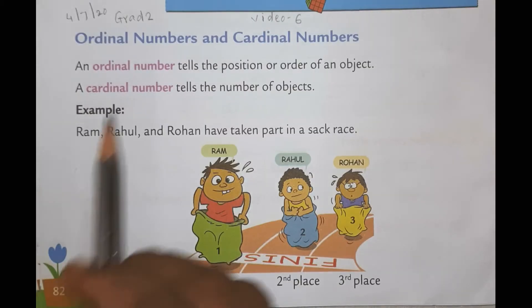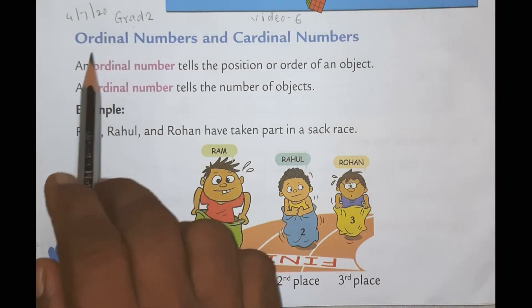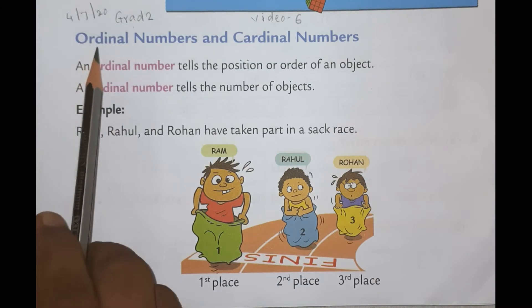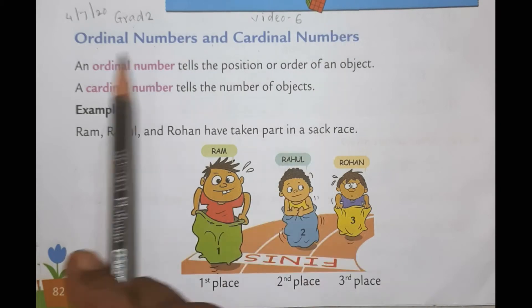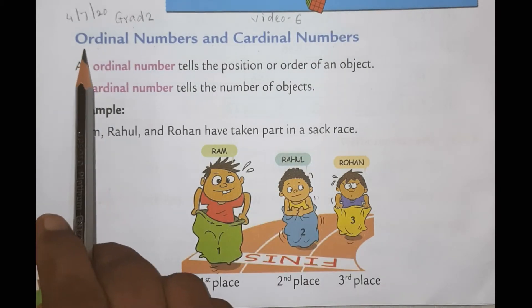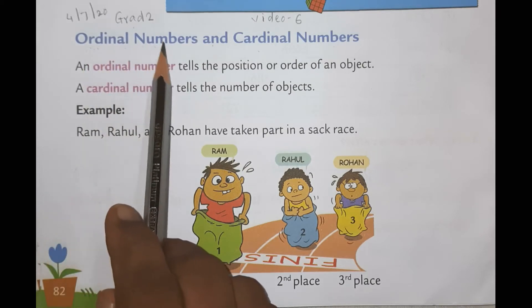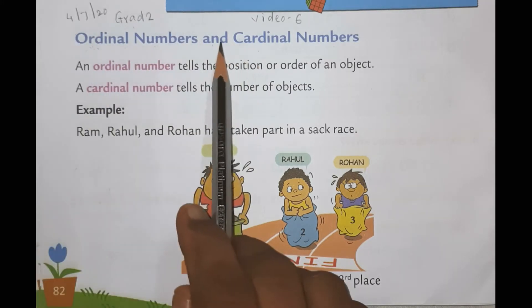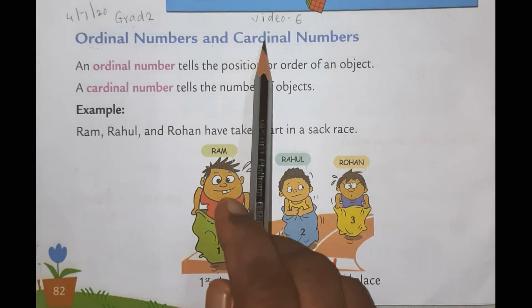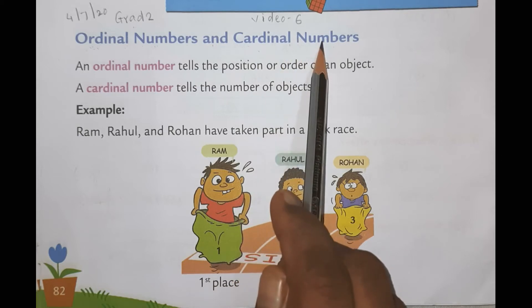Jai Barat children. So my great two children, today we are going to learn ordinal numbers and cardinal numbers. What is the spelling for ordinal? O-R-D-I-N-A-L. Ordinal numbers. N-U-M-B-E-R-S numbers. Ordinal numbers and C-A-R-D-I-N-A-L cardinal numbers.